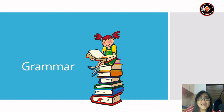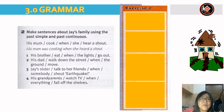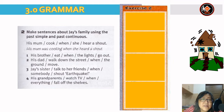Okay students, let's begin with the grammar lesson. The second exercise: make sentences about Jay's family using the past simple and past continuous. For example: 'His mom cooked when she heard a shout.' The sentence is: 'His mom was cooking when she heard a shout.'